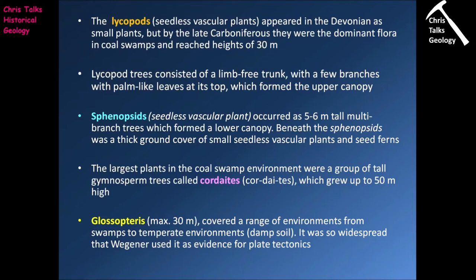The lycopod trees consisted of a limb-free trunk with a few branches that had big palm-like leaves at the top, forming the upper canopy of these coal swamp environments. This design is very similar to tree design in modern rainforests, where trees are packed very tightly together. If you want to get lots of sunlight you have to be the tallest tree around, because the tallest tree can get its canopy above the others and therefore receive as much sunlight as possible.